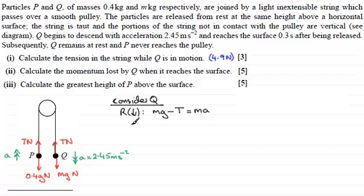And if I start to fill in some of my values here, I've got m times g. g will take us 9.8. And then minus the tension. The tension we worked out in the first part, it was 4.9 newtons. So it's going to be minus 4.9 is equal to m multiplied by a. And a was 2.45. So just put that in as 2.45.